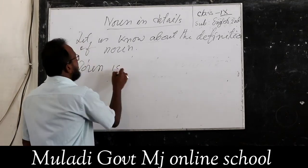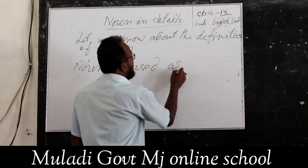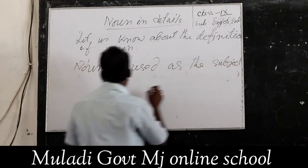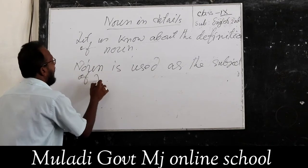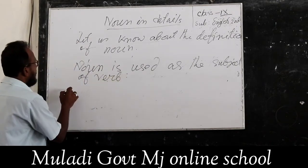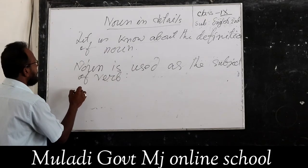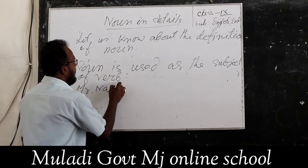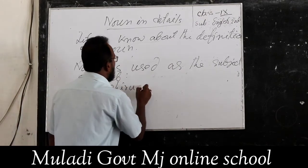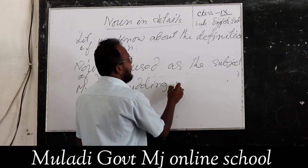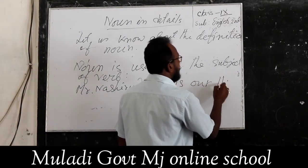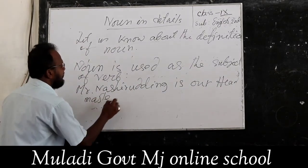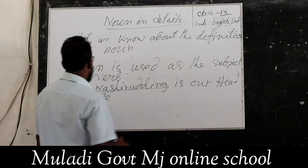Noun is used as the subject of a verb. For example, Mr. Nashir Uddeh — here the noun is the subject of the verb.